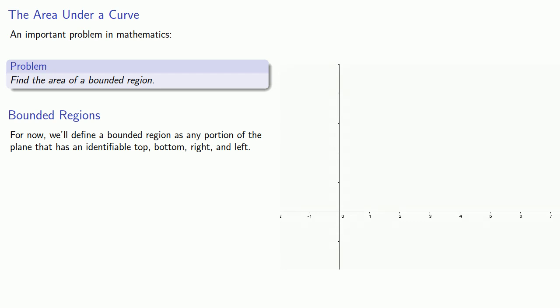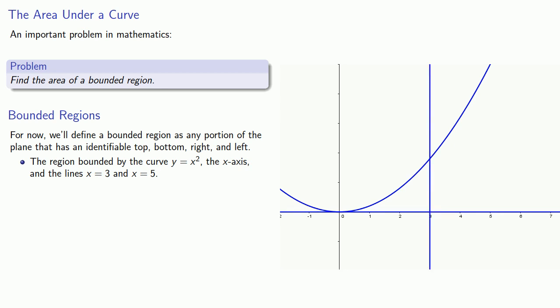For example, the region bounded by the curve y equals x squared, the x-axis, and the lines x equals 3 and x equals 5. Note that in this case our top, bottom, right, and left are clearly identifiable curves. Yes, mathematicians use the term curve to apply to straight lines.